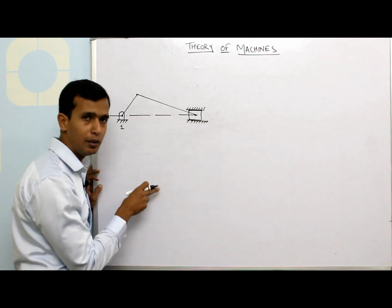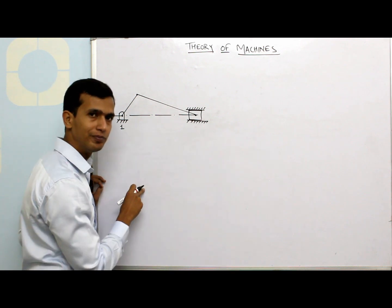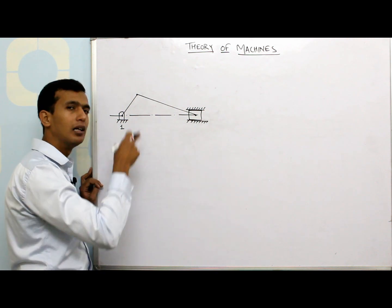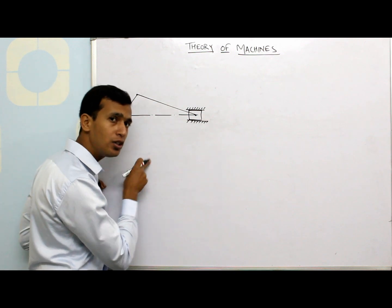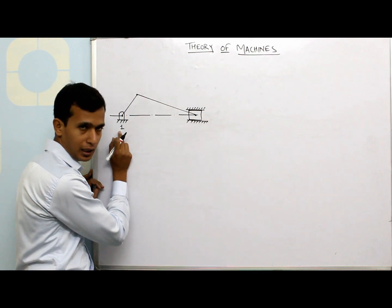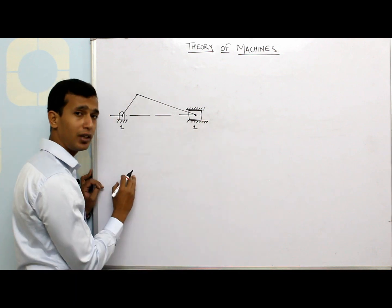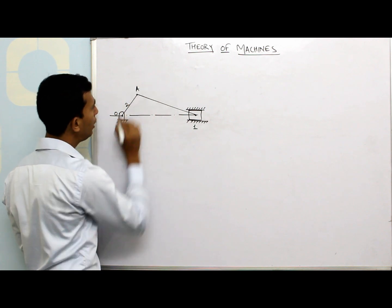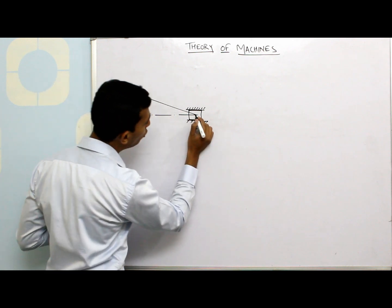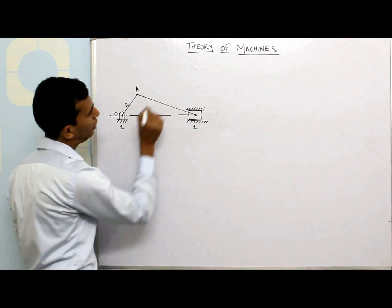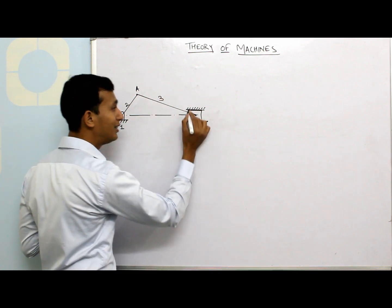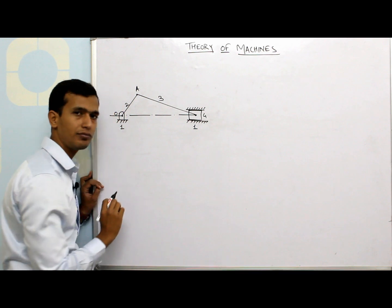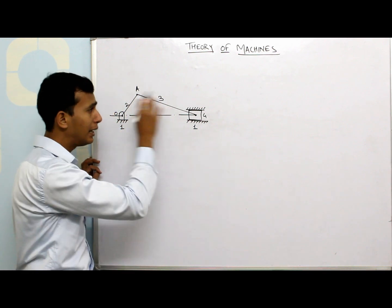A link is nothing but a basic element in a Mechanism or a Machine — a basic element connected in such a way that there is a certain amount of output. I have link number 1 here, which is the fixed link. This is link number 2, from point O to point A. From A to B there is another element connected to it — that is link number 3. And this slider is separately attached with this third link, so the slider becomes link number 4. So I have 4 links connected to each other.